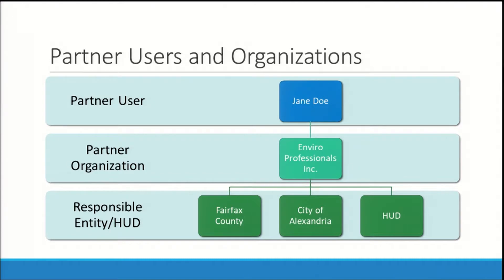This graphic shows one possible arrangement of relationships. Our partner user, Jane Doe, works for Enviro Professionals Inc. Enviro Professionals is associated with two different responsible entities, Fairfax County and the City of Alexandria, as well as HUD. It has these relationships because all three organizations have hired Enviro Professionals to assist with their environmental reviews and a HEROES administrator has associated Enviro Professionals with all three. These relationships allow Jane to start a Part 58 environmental review for Fairfax or Alexandria, or to start a Part 50 review for HUD, if she also has the proper privileges assigned to her.